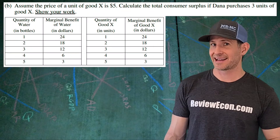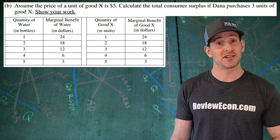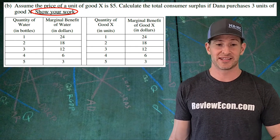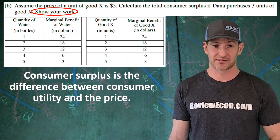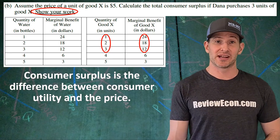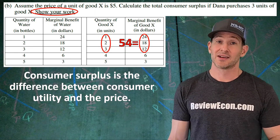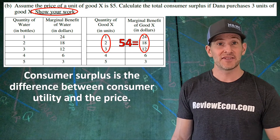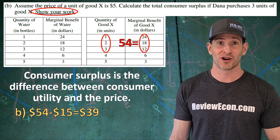For part B, we have a new assumption: the price of good X is $5, and we're going to calculate the consumer surplus Dana receives if she purchases three units of good X. Consumer surplus is the difference between a consumer's utility or benefit and the price paid for the product. We take the marginal benefits of the first three units of good X, add them together to get $54 of total benefit, then subtract the $15 paid for those three units. That gives us a consumer surplus of $39. Show your work to get this point.